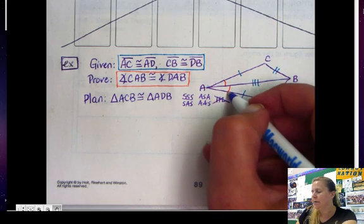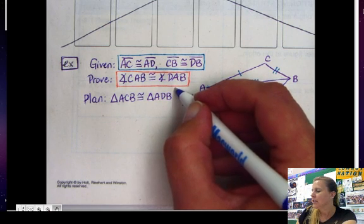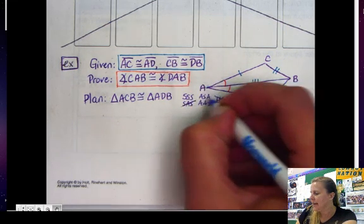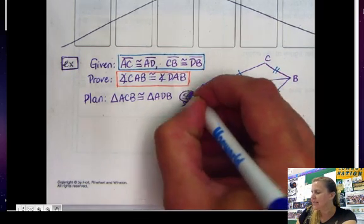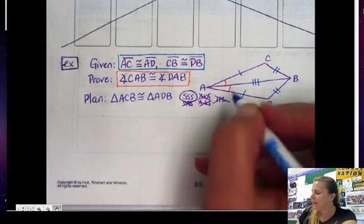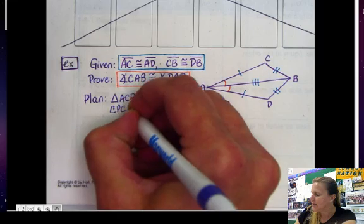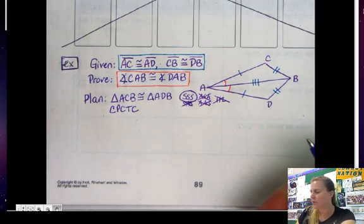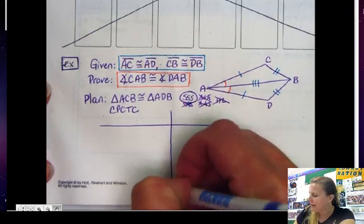This angle here, remember, is my angle that I want to prove, so I can't use it to prove the triangles are congruent. So everything that has angles in it won't work. So that means I'm left with side-side-side. That's how I'm going to prove the triangles are congruent. Then I'm going to do my proof statement and use CPCTC for what I want to prove. So there's my plan. Now I'm ready to go ahead and write my proof.